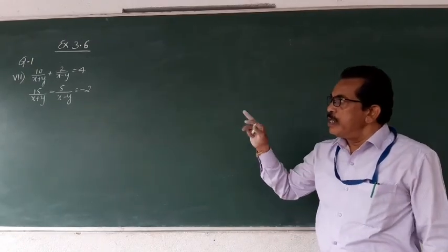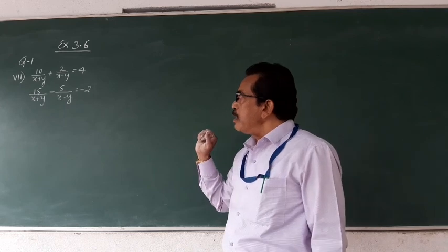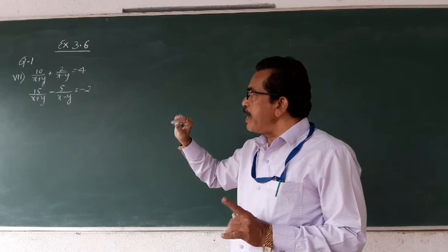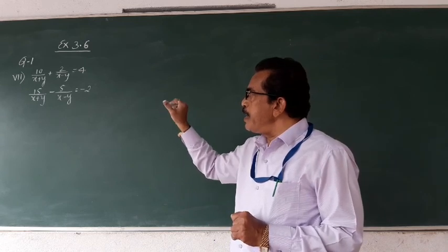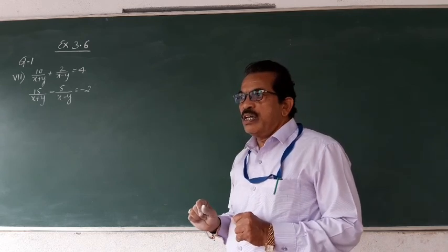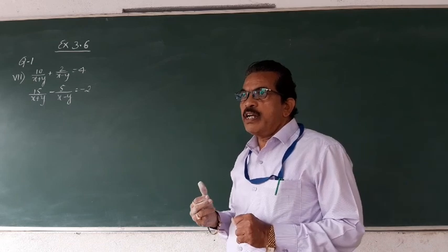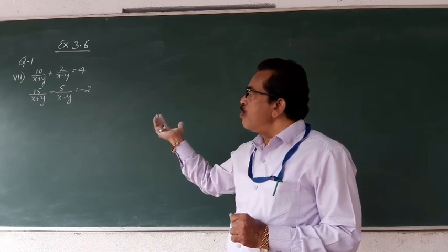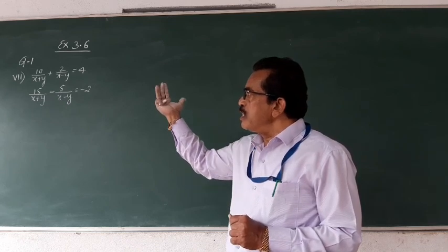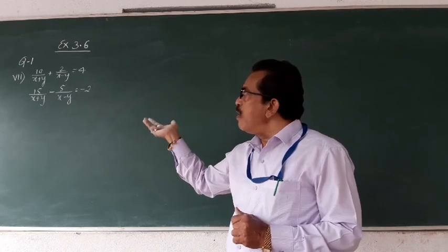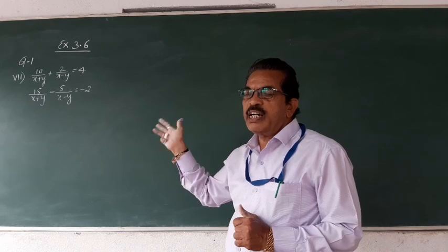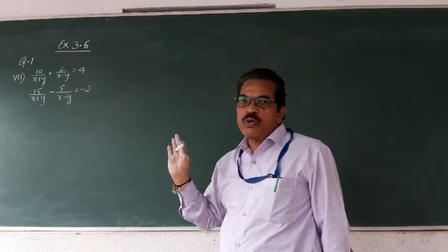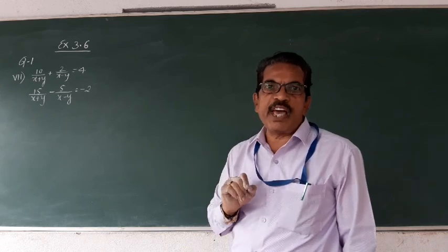Seventh one, first main — all these questions are from first main. See: 10 divided by x plus y plus 2 divided by x minus y. Here the denominators are binomials. So we have to consider x plus y or x minus y as one single term. We should solve such problems carefully.